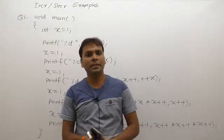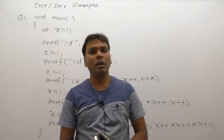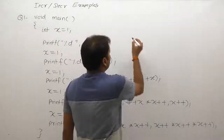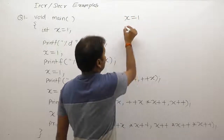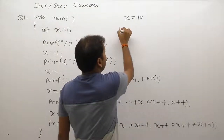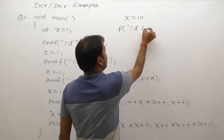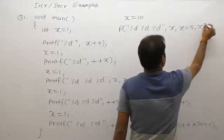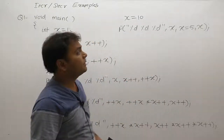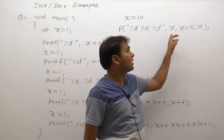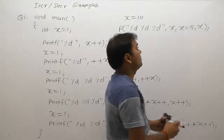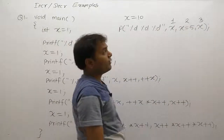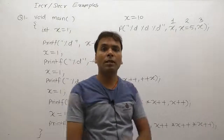Next topic: increment/decrement versus printf functions. As we are discussing, in printf function, all arguments of the printf function will be resolved from right to left. For example, if x equals 10, then printf with format specifiers like percent d, percent d, percent d, comma x, comma x equals 5, comma x — what is the result? Printf has three arguments: x, x=5, and x. This is the first expression, second expression, and third expression. In the printf case, expressions are solved from right to left.